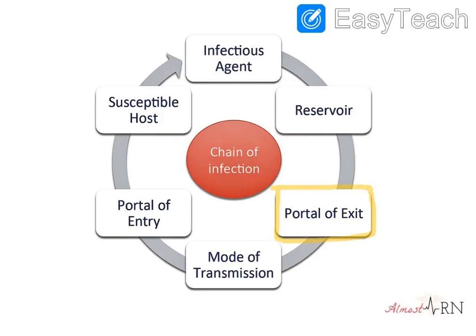From the reservoir, the bad guy is going to want to escape through a portal of exit — a means for leaving. That could be the respiratory tract, the skin, or a mucous membrane. Then there's the mode of transmission — how the germ leaves. There are four types: contact, droplet, airborne, and vector-borne.